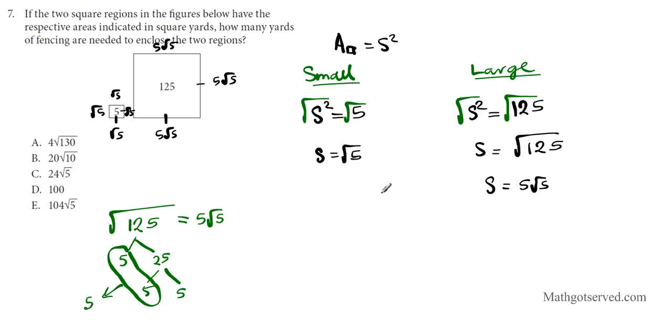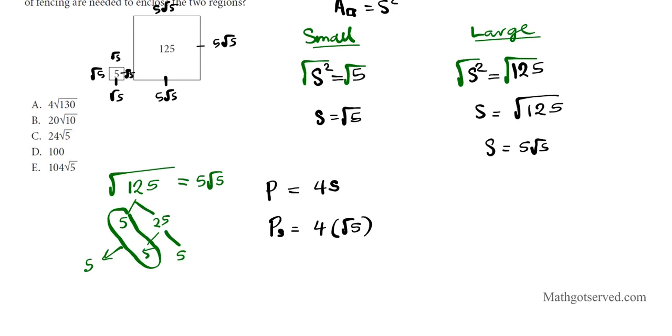So what is the perimeter? The perimeter is basically 4S because you have four sides of equal measure. So the perimeter of the small is going to be 4 times the measure of one side, which is 4 times root 5, which equals 4 root 5. And what is the perimeter of the large? It's going to be 4 times 5 root 5, which is equal to 20 root 5.